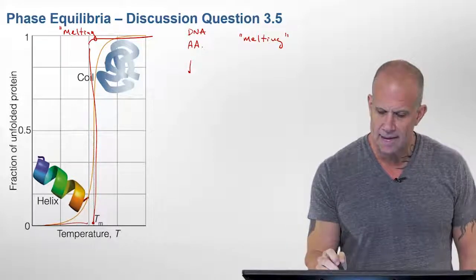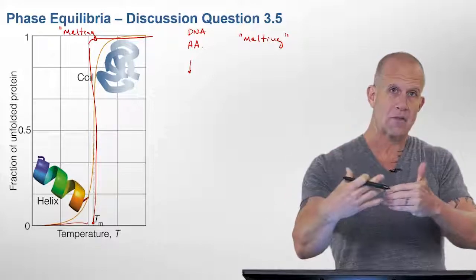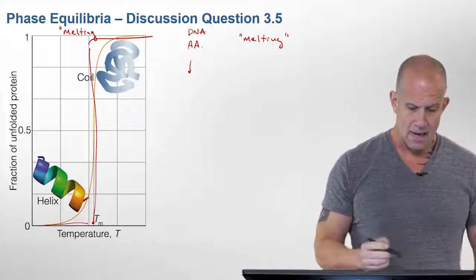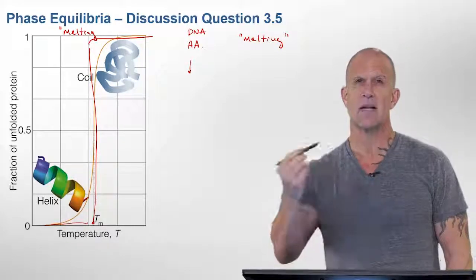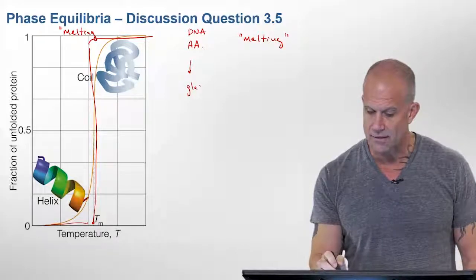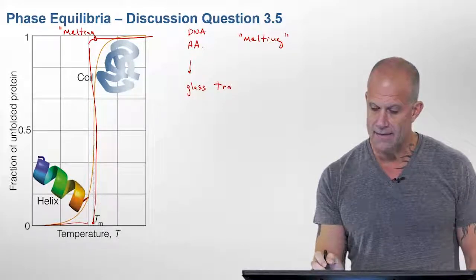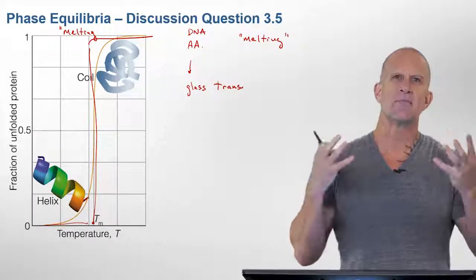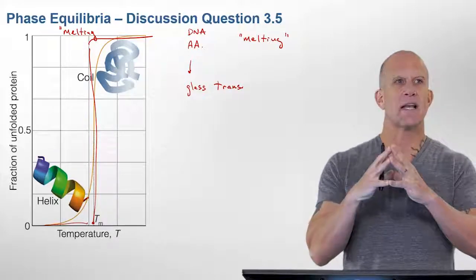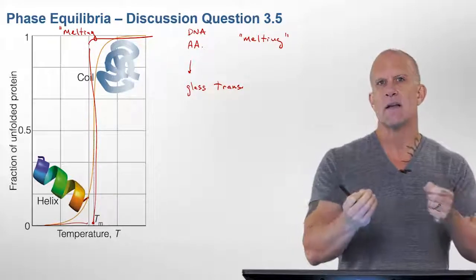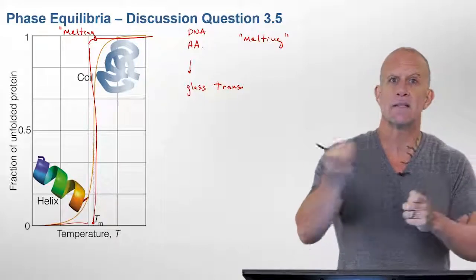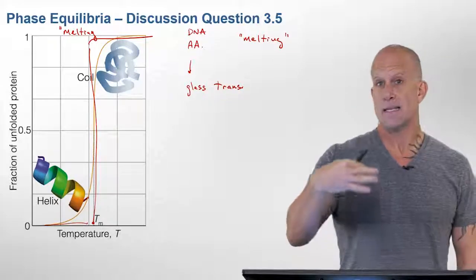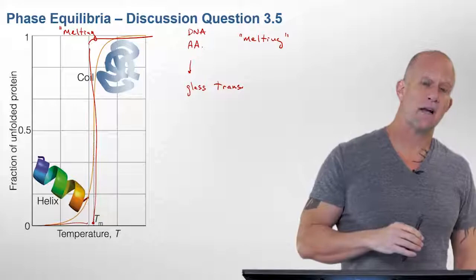And then also studying this as you kind of move to transitions that move away from this kind of first order discontinuity in a variable to ones that are more continuous second order phase transitions, glass transition temperatures, etc., that also have kinetic factors associated with them. This really gets us to the heart of what I would say practical and realistic phase transitions that happen in a lot of biological systems. So this is given as an example as well as a figure in your book.